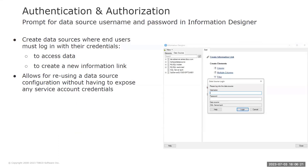In Information Designer, you can now create data sources where the end users must log in with their credentials, both to access data and to create a new information link. To achieve this, you can select here in the user authentication checkbox for data sources, and you do not input the username or password. This allows for reusing a data source without having to expose any service account credentials. Previously, only the end user was prompted for credentials when opening an information link for the data source, but for using the data source in Information Designer, the credentials had to be stored. So this simplifies that.